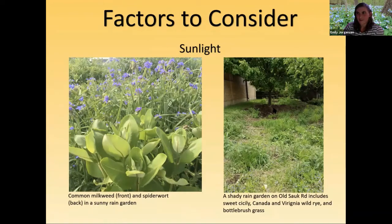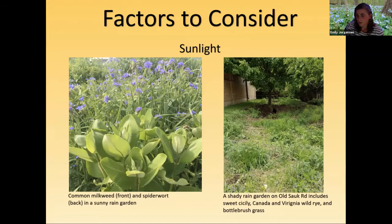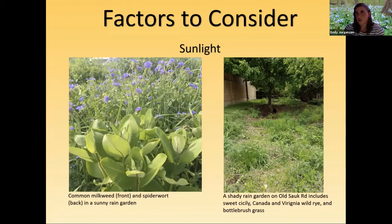Now we'll talk about the factors to consider when making your planting plan. The number one most important factor is how much sunlight your rain garden gets — once you determine that, it will shape all your other plant choices. On the left is a sunny rain garden with common milkweed and spiderwort thriving. On the right is a shadier rain garden. A lot of people worry that shade makes plant selection harder, but there are actually many native plants that prefer shadier sites, and search tools let you filter specifically for shade-tolerant plants.